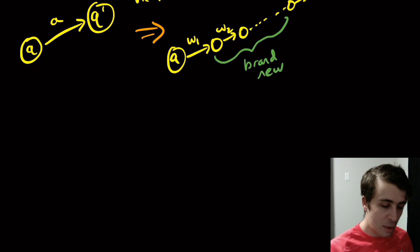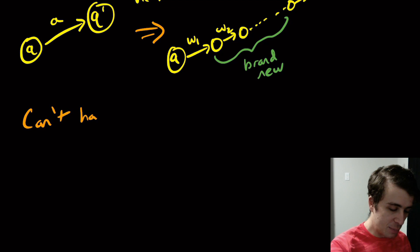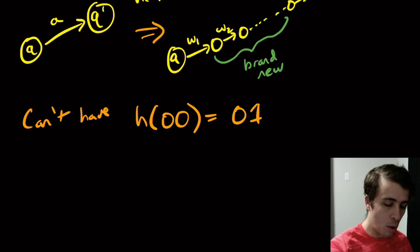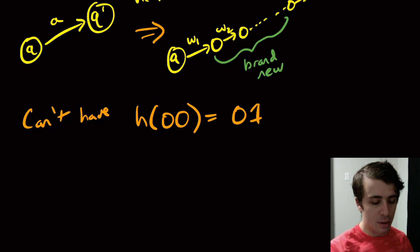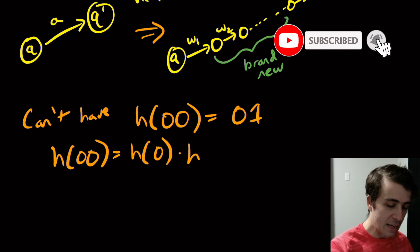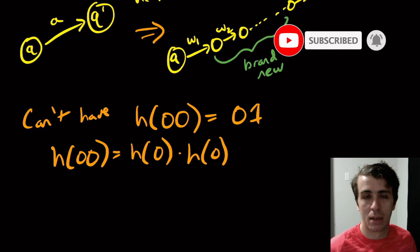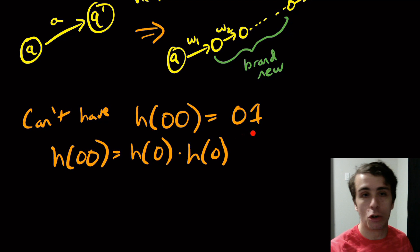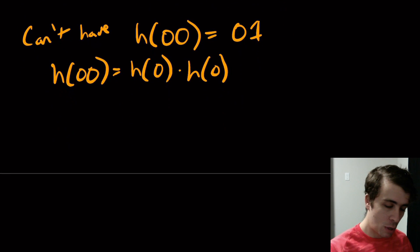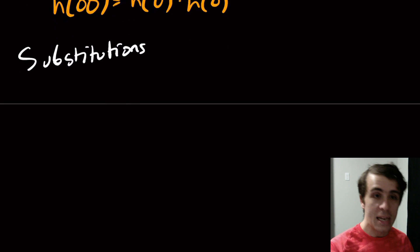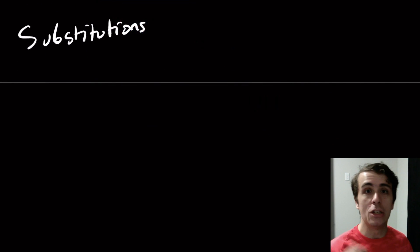One thing to note: we can't have something like h(00) = 01, for example. The reason is that h(00) must equal h(0) concatenated with h(0) by the morphism property, and there's no way to make h(0) applied twice yield 01, since those are different characters. That motivates something more general called substitutions.